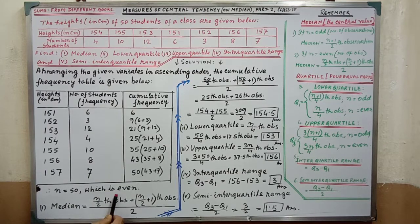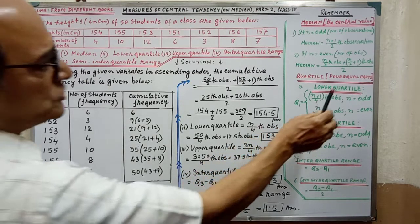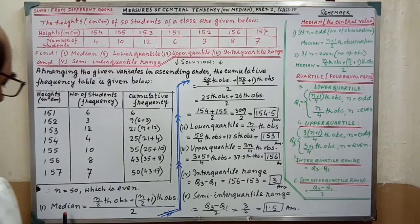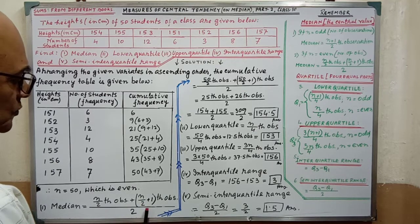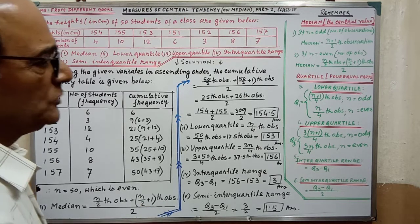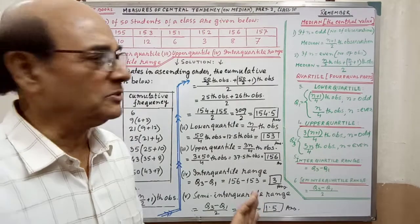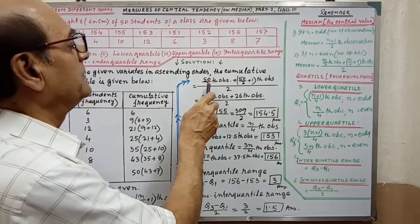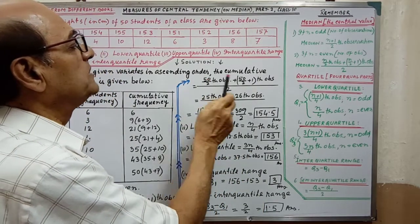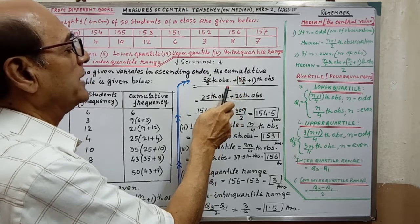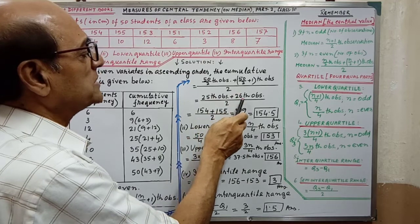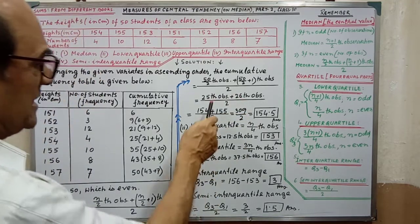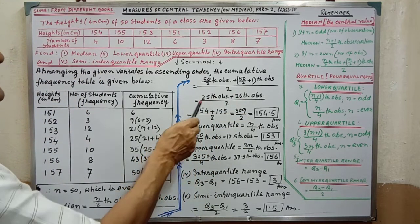For the median, n equals 50, which is even. In the case of even n, the formula is: median = [(n/2)th observation + (n/2 + 1)th observation] / 2. After writing the formula, we put in the value n=50. This gives us the 25th observation and the 26th observation.